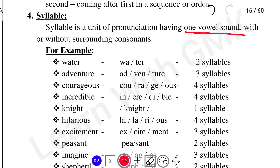Take the word 'Water' — it has two syllables: WA-TER. The vowel sounds divide it into two parts. 'Adventure' has three syllables. 'Courageous' has four syllables.